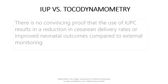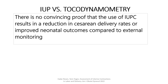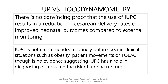There is no convincing proof that the use of intrauterine pressure catheter results in a reduction in cesarean delivery rates or improved neonatal outcomes. Therefore, it is not recommended routinely, but may be considered in specific clinical situations such as obesity, patient movement, or trial of labor after cesarean, though there is no evidence suggesting intrauterine pressure catheter has a role in diagnosing or reducing the risk of uterine rupture.